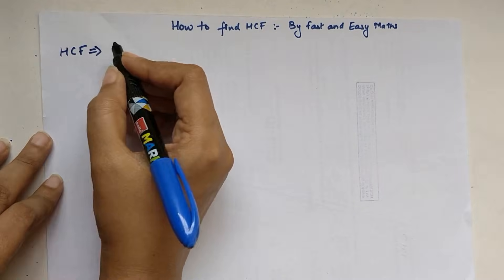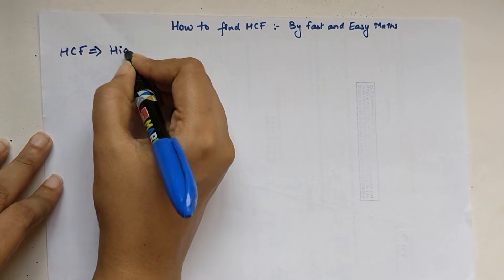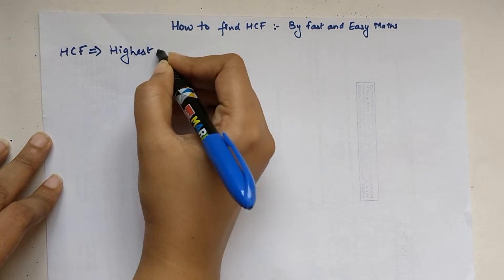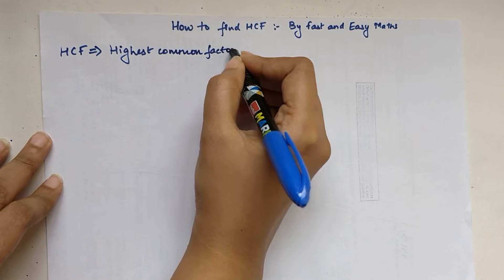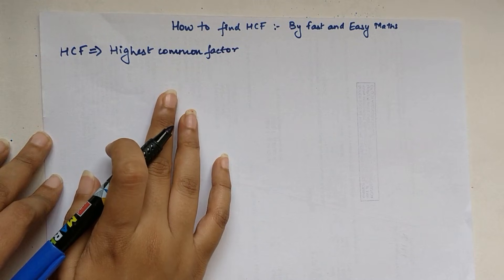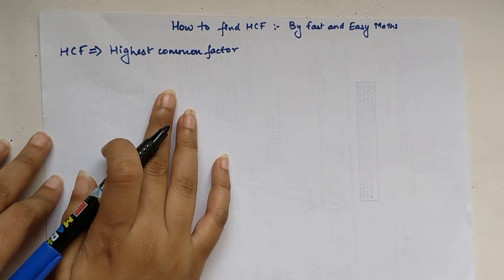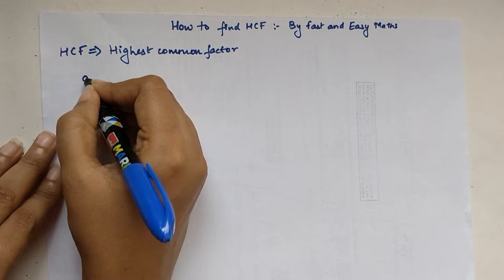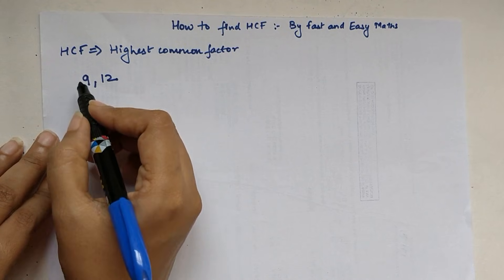The full form of HCF, as we all know, is Highest Common Factor, meaning that whenever we have a given set of numbers, we need to find a number which will be a factor of all of those numbers. So let us take for example 9 and 12 — these are two numbers given to us.